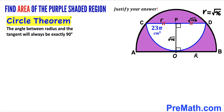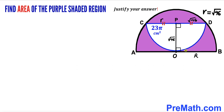Recalling the circle theorem: the angle between the radius and the tangent line is always 90 degrees. Here, AB is the tangent line, so this angle is 90 degrees, which means line AB is parallel to chord CD. Connecting center O with point D gives us right triangle OPD.